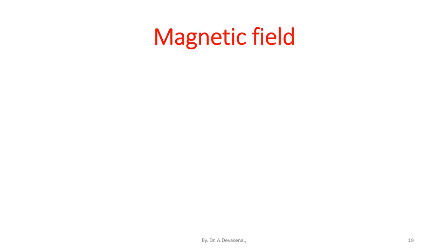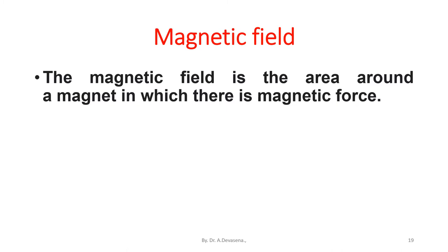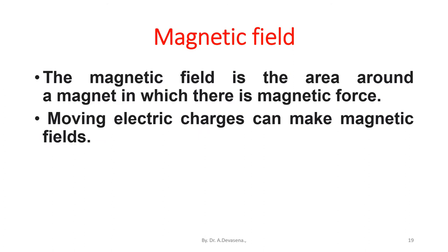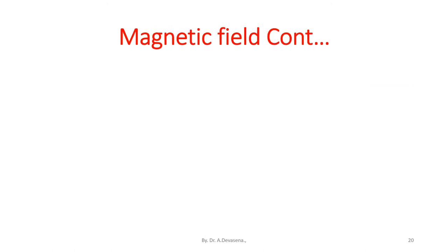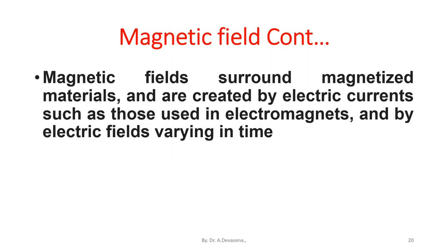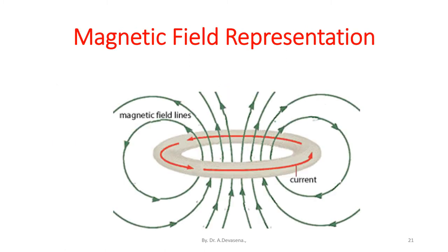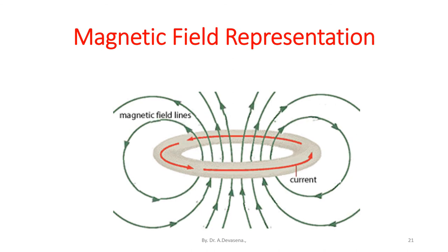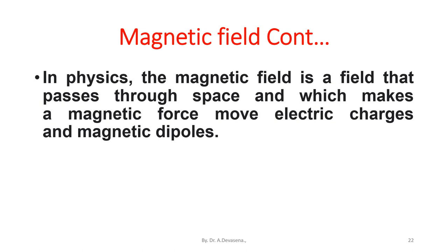A magnetic field is the area around a magnet in which there is magnetic force. Moving electric charges can make magnetic fields. Magnetic fields surround magnetized materials and are created by electric currents such as those used in electromagnets, and by electric fields varying in time. In this representation, magnetic field lines are indicated and the red color line indicates the current that is flowing through the magnet. In physics, the magnetic field is a field that passes through space and which makes a magnetic force move electric charges and magnetic dipoles.